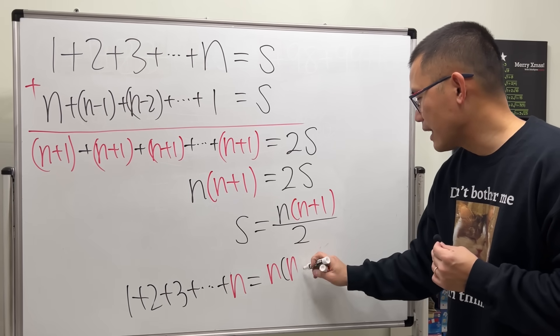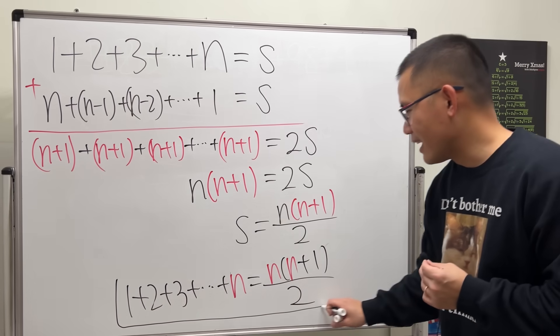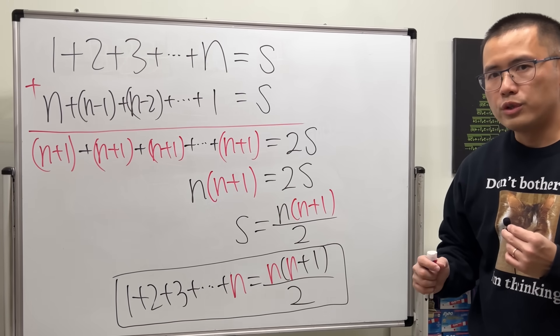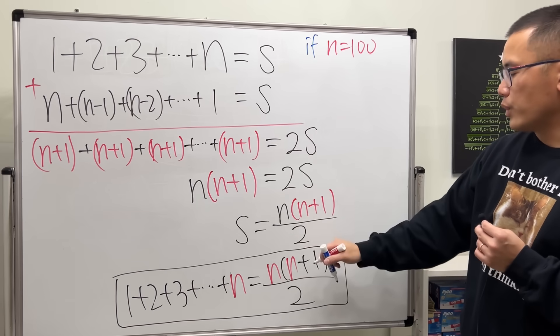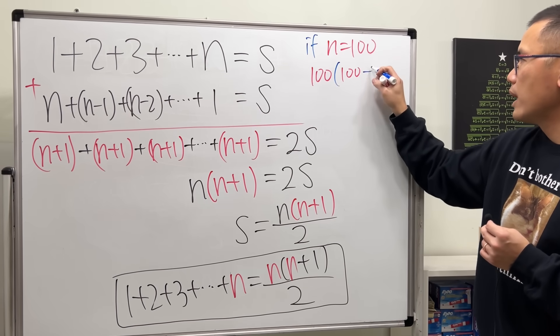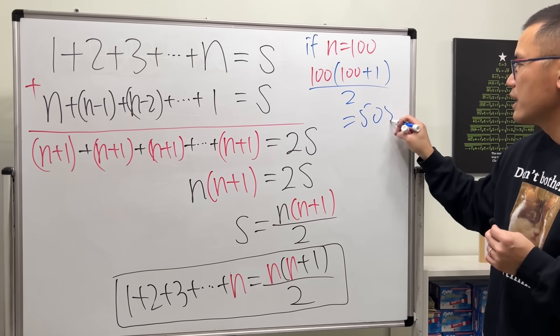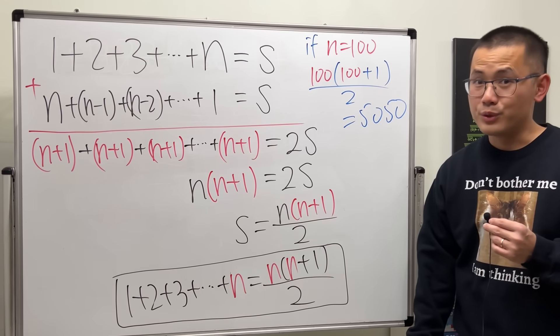And now going back to the original question, n is equal to 100, and we will get 100 times (100 + 1) all over 2. Work that out, you also get 5050, which is really cool.